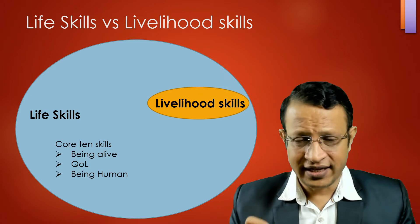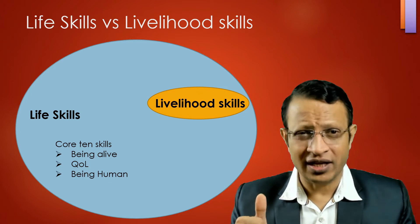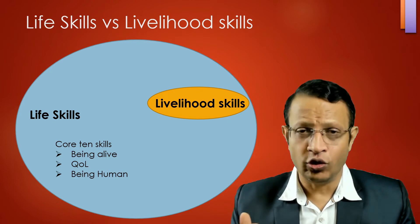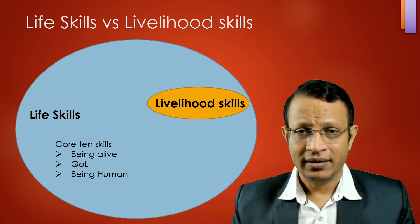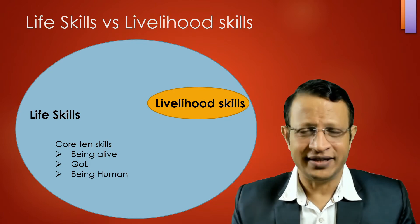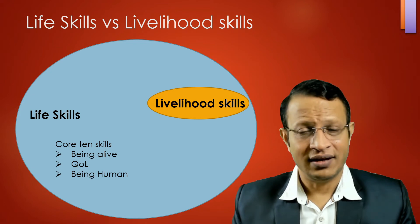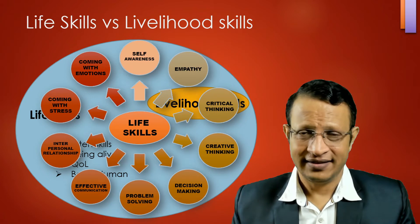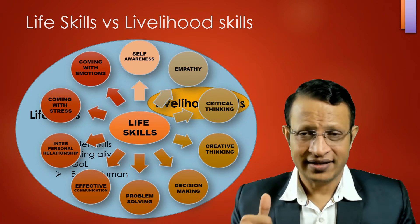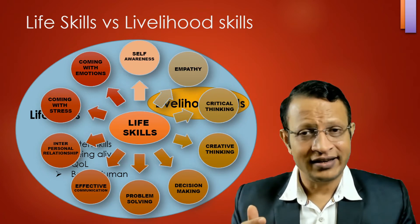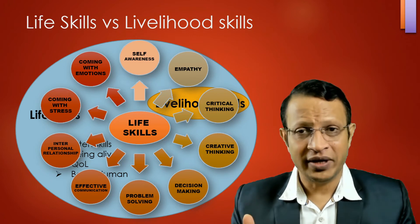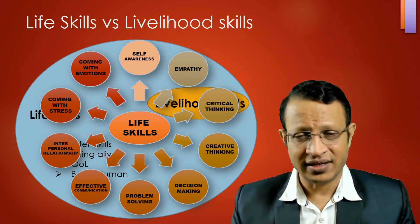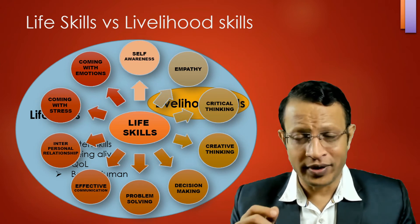There are 10 core life skills advocated by the World Health Organization. Being alive, quality of life, being human — and earning for livelihood is only part of it. Life skill is larger and consists of these 10 skills: self-awareness, empathy, critical thinking, creative thinking, decision making, problem solving, effective communication, interpersonal skills, coping with stress, and coping with emotions.